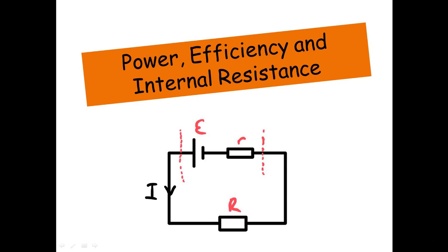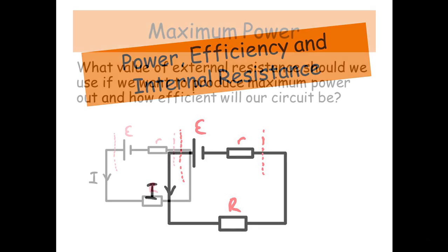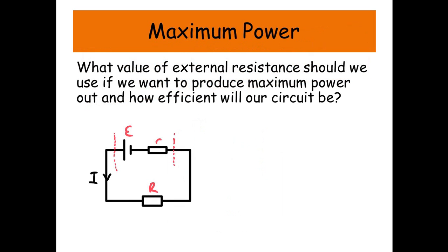Hi guys, today I want to talk to you about power, efficiency and internal resistance. So we want maximum power out of our circuit. What value of external resistance should we use if we want to produce maximum power out and how efficient will our circuit be?